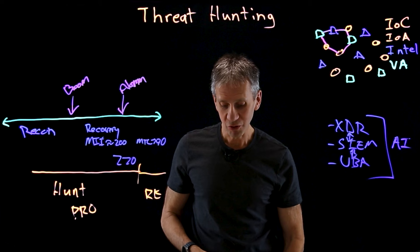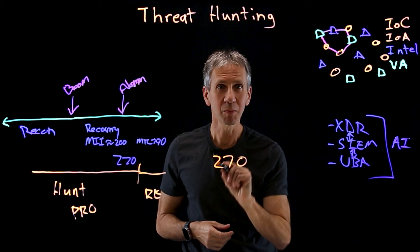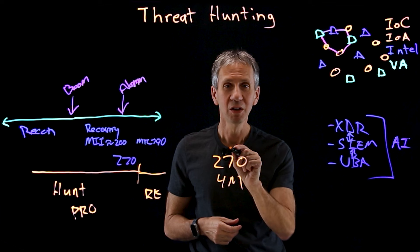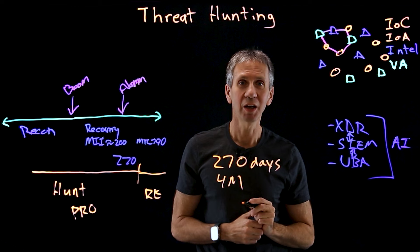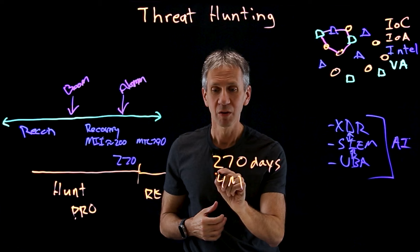What we're trying to do is avoid two numbers: 270 and 4 million. 270 is roughly the number of days between boom and containment according to the Ponemon Institute. Also according to that same survey, 4 million dollars is the average cost of a data breach. That's what we're trying to avoid.